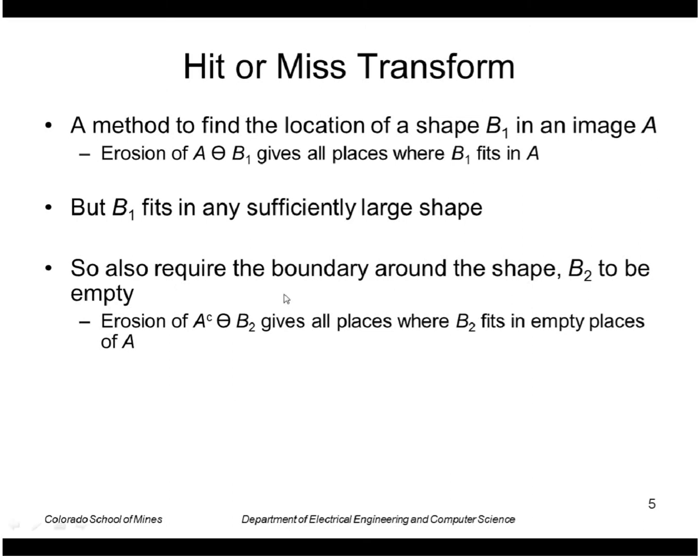So we want both the shape to fit in A and the boundary to be empty at that location. So we can describe that as the complement of A eroded by B2. That's all the places where B2 fits in the empty places of A. So we want both of those locations: the places where B1 fits in A and the location where B2 fits in the complement of A.